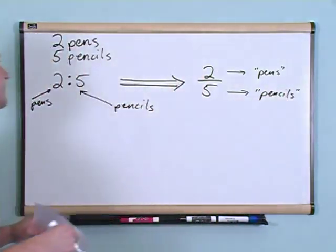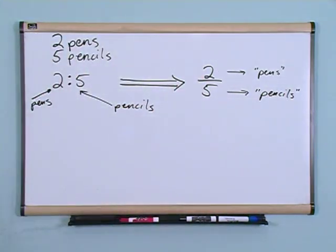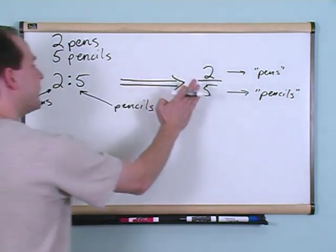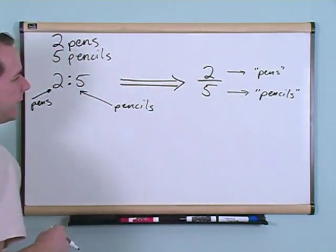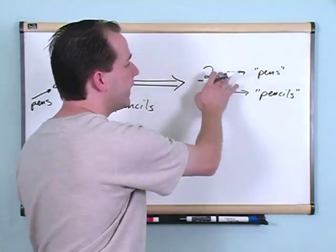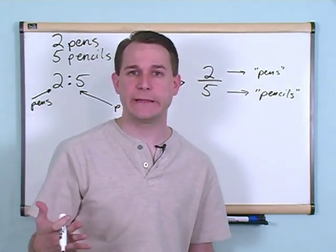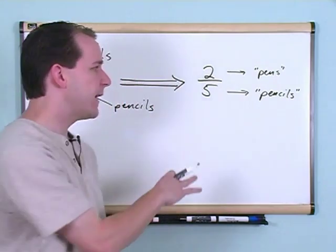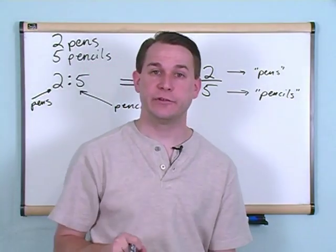What it means is that for every five pencils that I find in a drawer, let's say, I think that I should find two pens. That's what a ratio means. For every five pencils, I should find two pens.